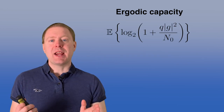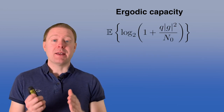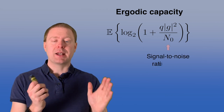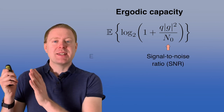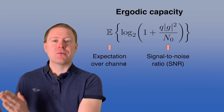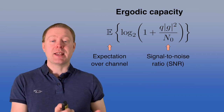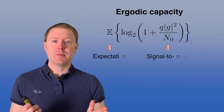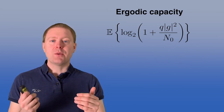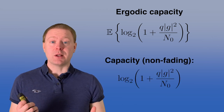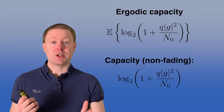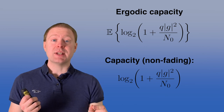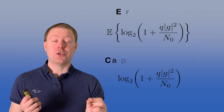The ergodic capacity has the same shape as the capacity we are used to: log₂ of 1 plus some SNR expression. There is an expectation in front of the log because the SNR depends on the random realization of the channel. We can compare it with the corresponding non-fading channel where we also get log₂ of 1 plus SNR, but now the SNR expression contains a G that is not random.